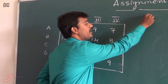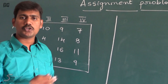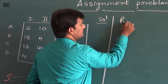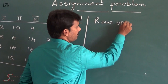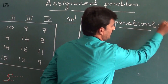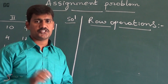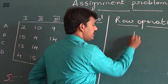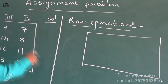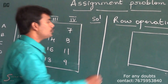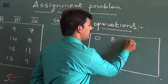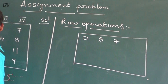We are going to apply 3 steps to solve this assignment problem. The first step is the row operation: take the minimum element of each row and subtract it from the remaining elements. In the first row, the minimum element is 2. So: 2 minus 2 is 0, 10 minus 2 is 8, 9 minus 2 is 7, and 7 minus 2 is 5.